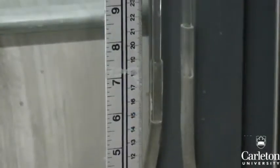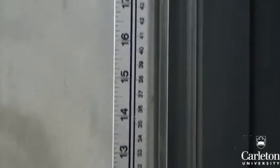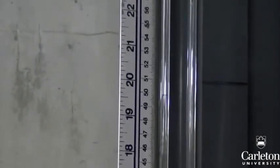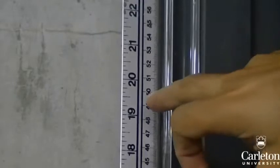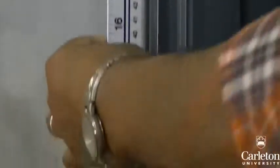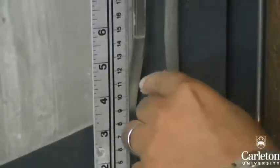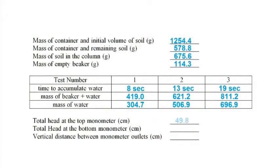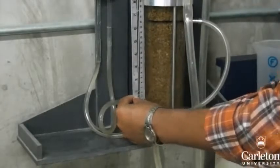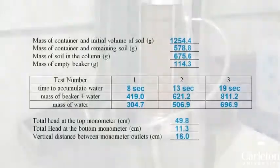Before we finish, we need to calculate the head applied to the sample. To do this, measure the total head at each manometer from the base of the cylinder. Here the head height of the top manometer is 49.8 cm, and 11.3 cm for the bottom manometer. Finally, record the difference in height between the outlets to the two manometers — you can draw a line around the outside to help. In our case this was 16 cm.